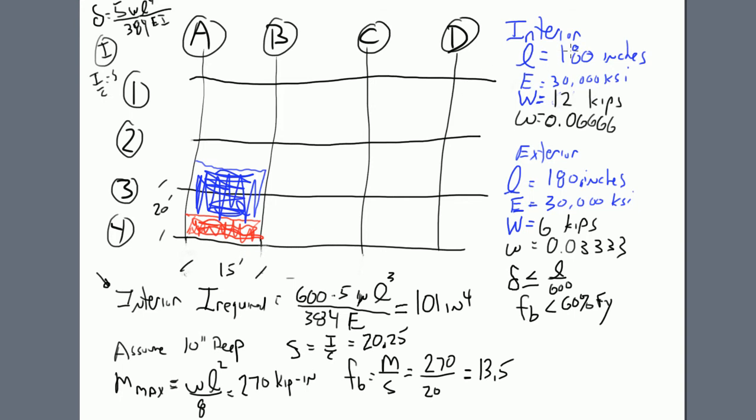The span as we laid it out was 180 inches or 15 feet. The modulus of elasticity of steel is 30,000 KSI or 30 million PSI. The load is 12 kips based on 40 pounds per square foot load. We have 20 times 15 equals 300 times 40, which gets you 12 kips. If we figure that per inch, we get 0.0666 kips per lineal inch.